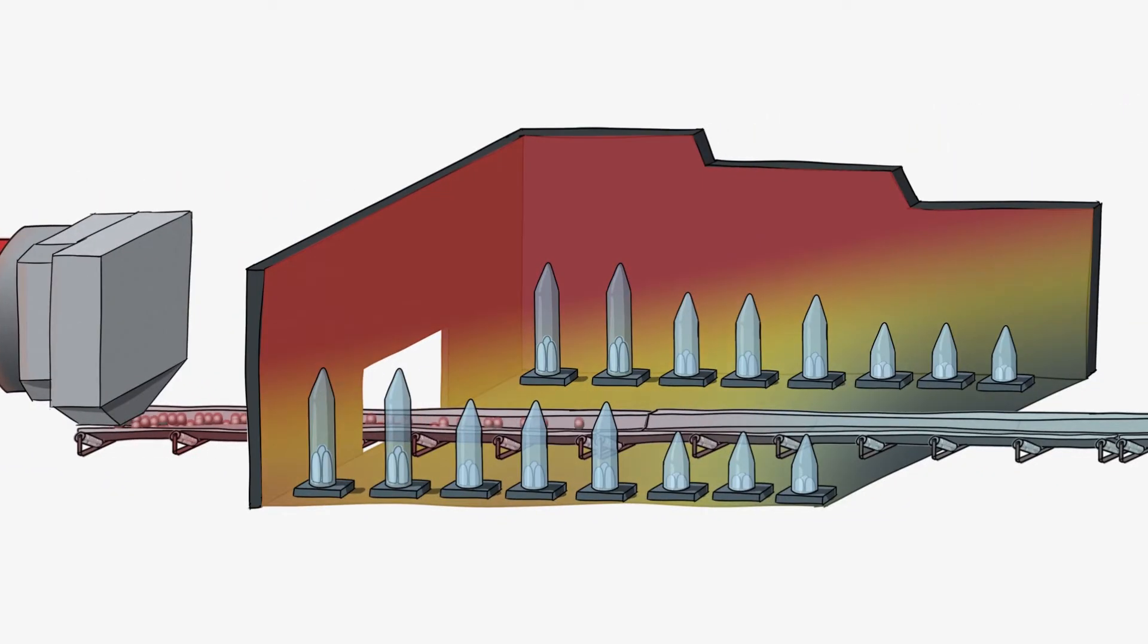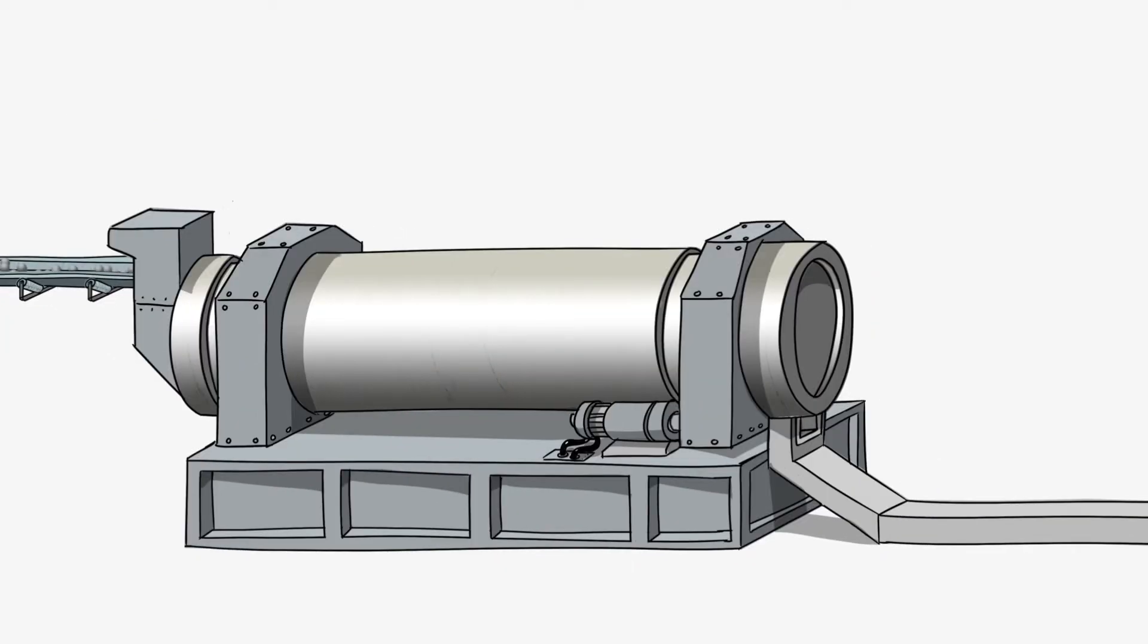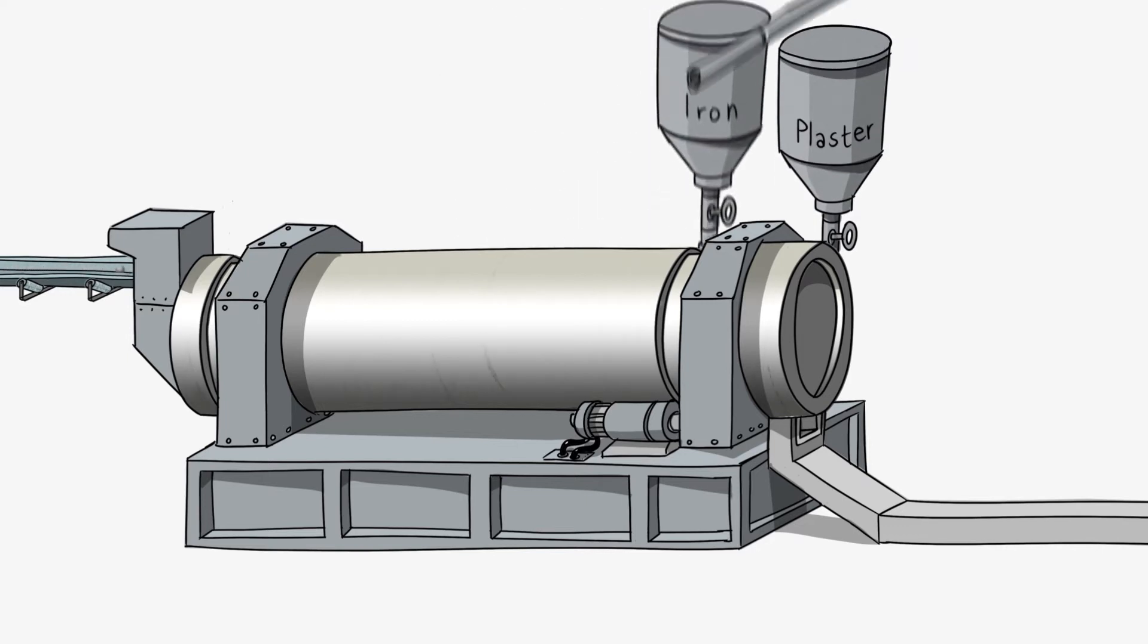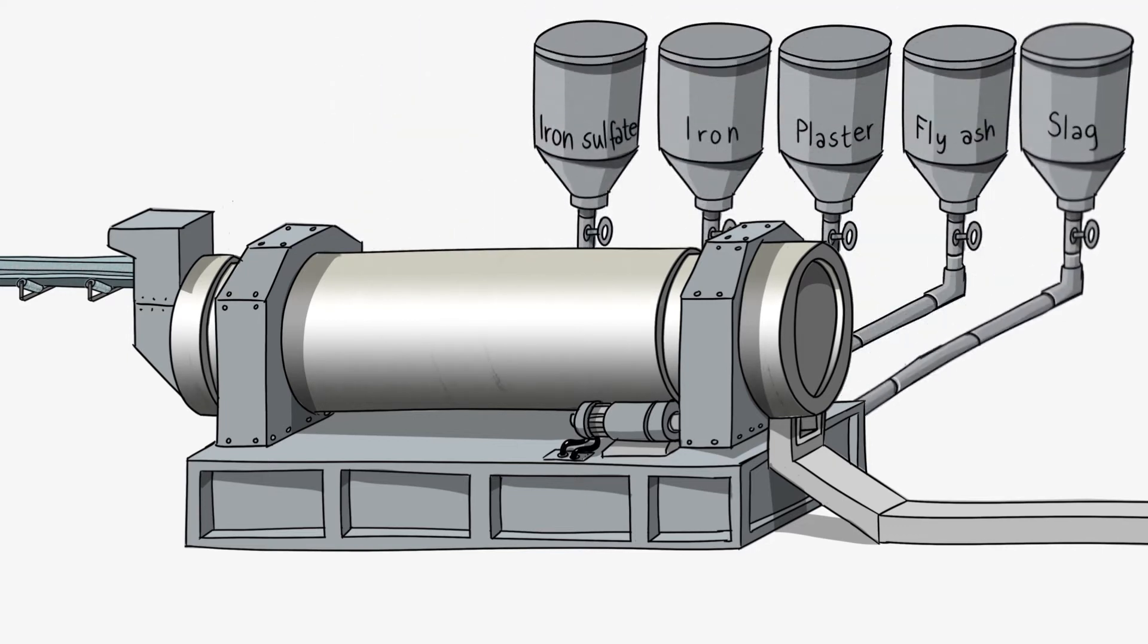The clinker enters a cooler, where it is cooled rapidly to approximately 100 degrees Celsius before being transported to a storage silo. In the final stage of the production process, the clinker is ground in cement mills. At this point, it is finely ground to cement and 3-5% gypsum is added to prevent the concrete from hardening too quickly.